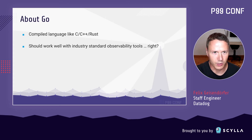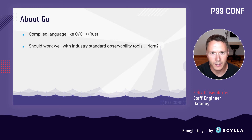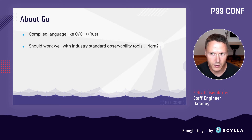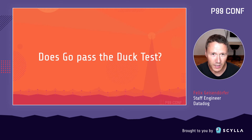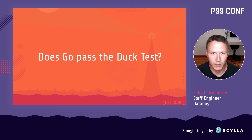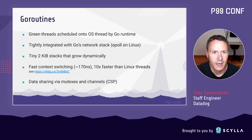The Go compiler produces native binaries like C, C++, and Rust, so naively one might expect Go to play very well with industry-standard observability tools aimed at native applications. To check this assumption, let's put Go through the duck test: if it looks like a duck, swims like a duck, and quacks like a duck, then it's probably a duck. So is Go a duck like other compiled languages? Let's find out.